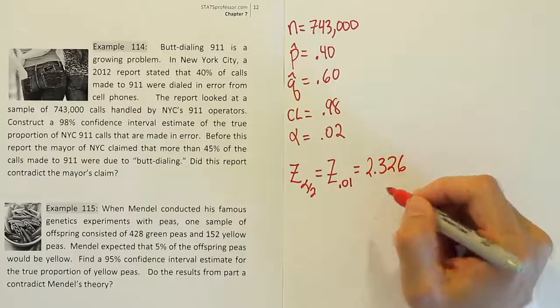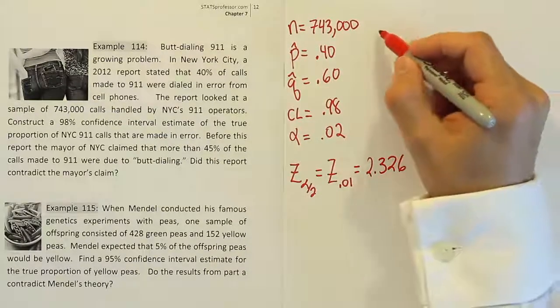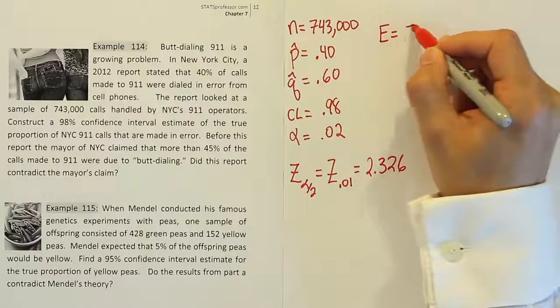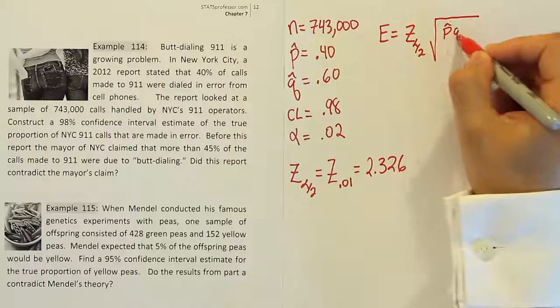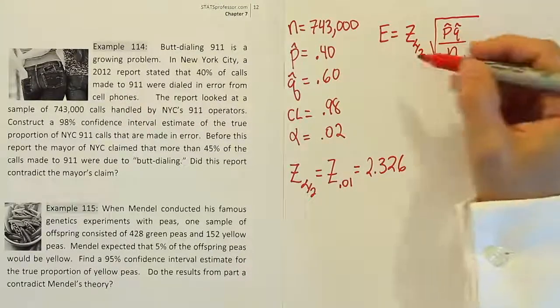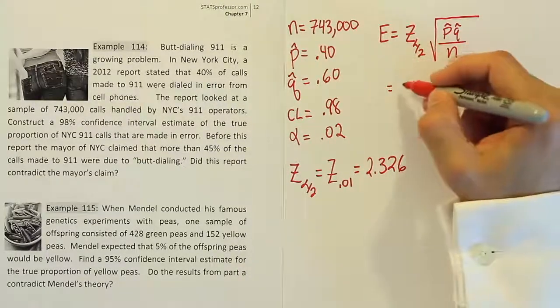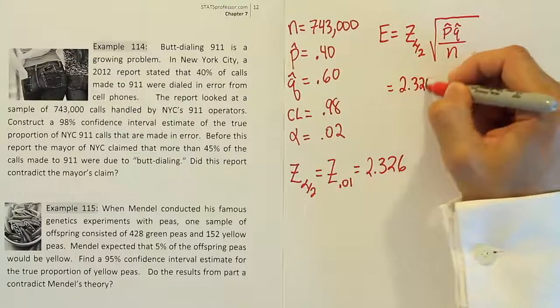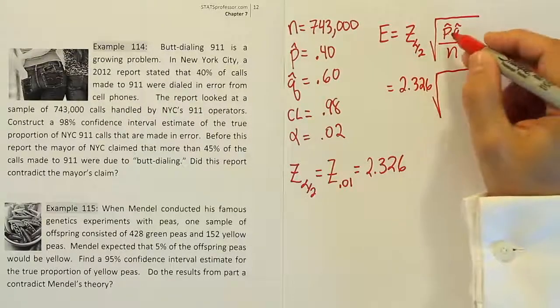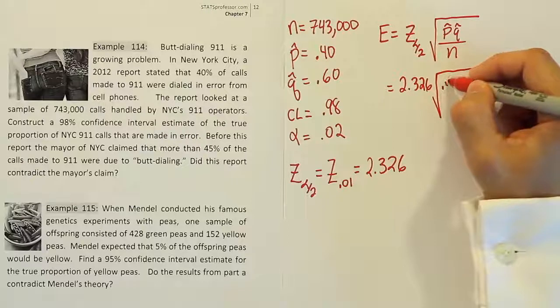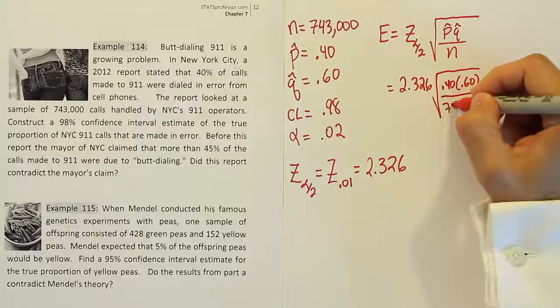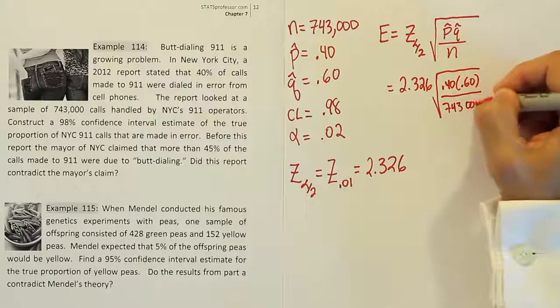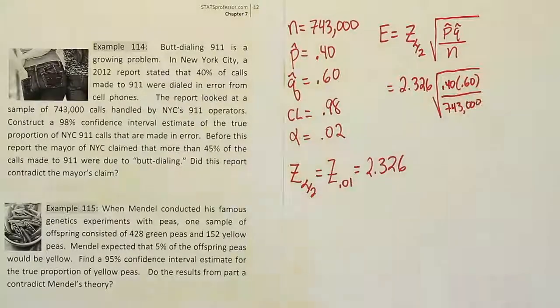Our next step is to get our margin of error. Remember the margin of error is equal to z alpha divided by 2 for these problems times the square root of p hat q hat over n. Okay, so z alpha divided by 2 is 2.326 times the square root of p hat times q hat is 0.40 times 0.60. And then we're going to divide all that by the n, which is a huge n, 743,000.